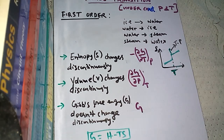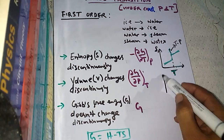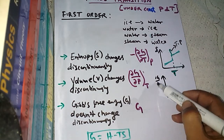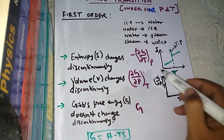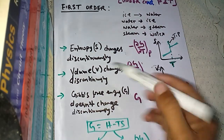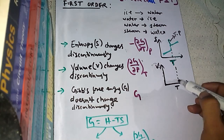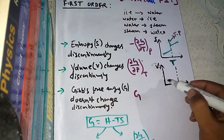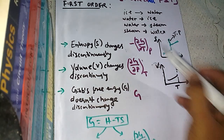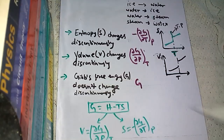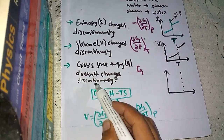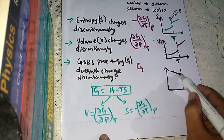The second graph shows volume versus temperature for first order phase transition. Volume, which equals ∂G/∂P at constant temperature, also changes discontinuously — there is a clear discontinuous jump in the V-T graph at the transition point. The third graph shows Gibbs free energy G versus temperature. Since G does not change discontinuously, this graph is continuous and smooth throughout the phase transition.